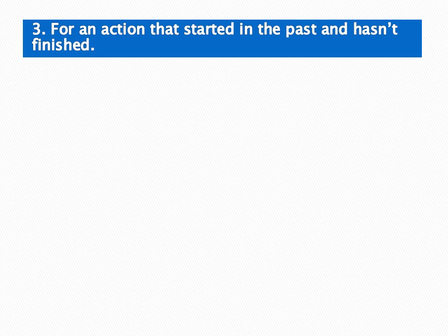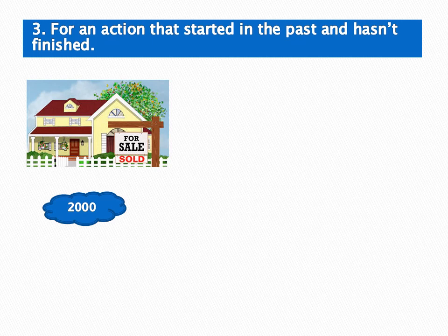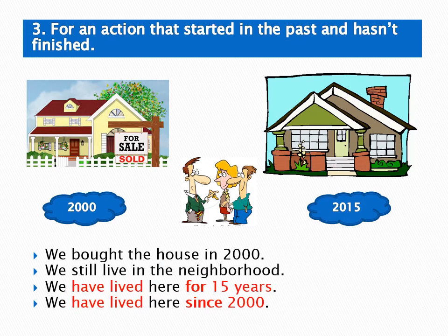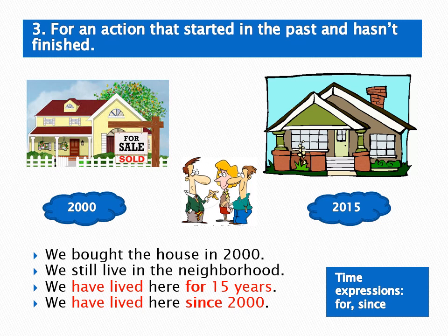The third function is for an action that started in the past and hasn't finished yet. Look at the house in 2000 and the house in 2015. The sentences are: 'We bought the house in 2000. We still live in the neighborhood. We have lived here for 15 years. We have lived here since 2000.' Remember, the time expressions are 'for' (selama) and 'since' (sejak).